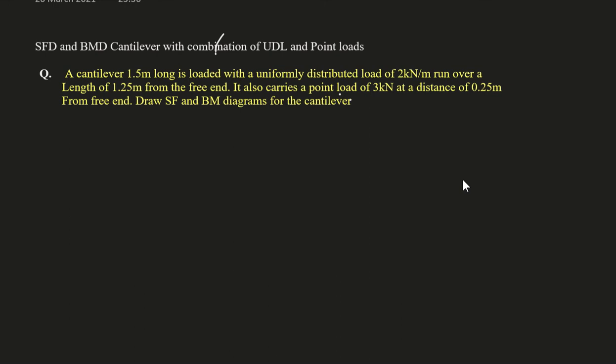In this video, let us see two examples of shear force and bending moment diagrams of a cantilever beam carrying uniformly distributed load and point load together. A cantilever beam of length 1.5 meter is loaded with a uniformly distributed load of 2 kN per meter run over a length of 1.25 meter from the free end. It also carries a point load of 3 kN at a distance of 0.25 meter from the free end. Draw shear force and bending moment diagrams for the cantilever.